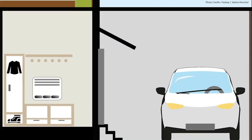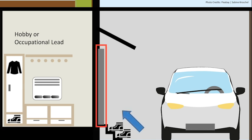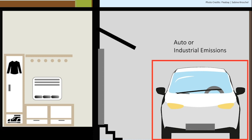Sources of lead carried into the home. There is a picture of an entryway leading into a garage with a car inside, two steps with tennis shoes, and a door leading into an entryway storage room — all highlighted as potential lead hazards. If a person has an occupation or hobby that exposes them to lead, they may carry it into the home on their clothes, shoes, and body. Contaminated clothing and shoes can transfer lead to other clothing if they are not washed before being stored in the home. Auto and industrial emissions can also be a source of lead in the air.